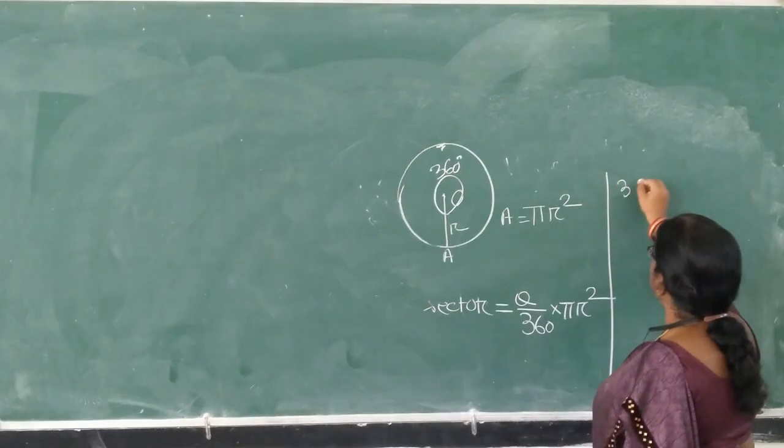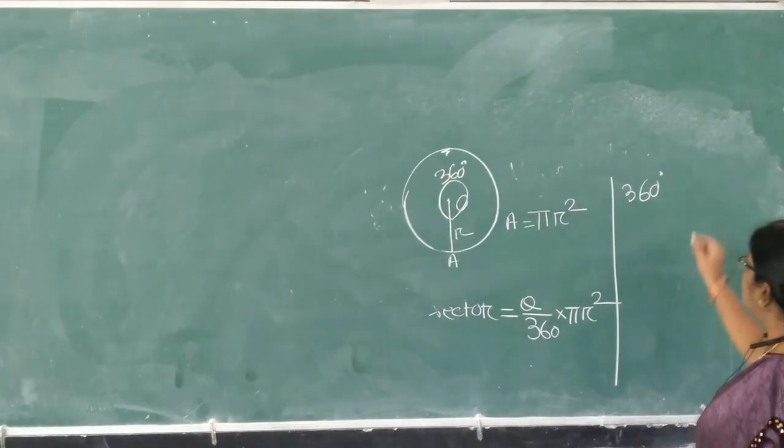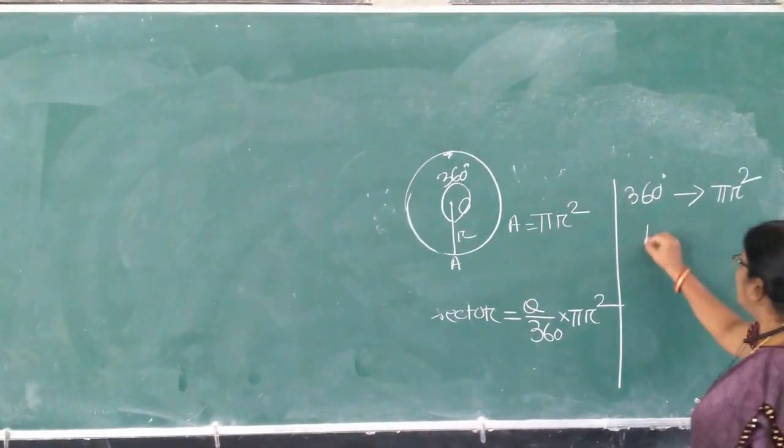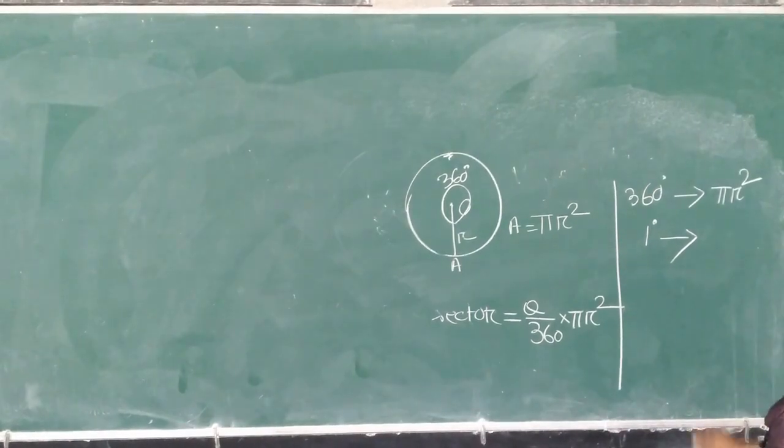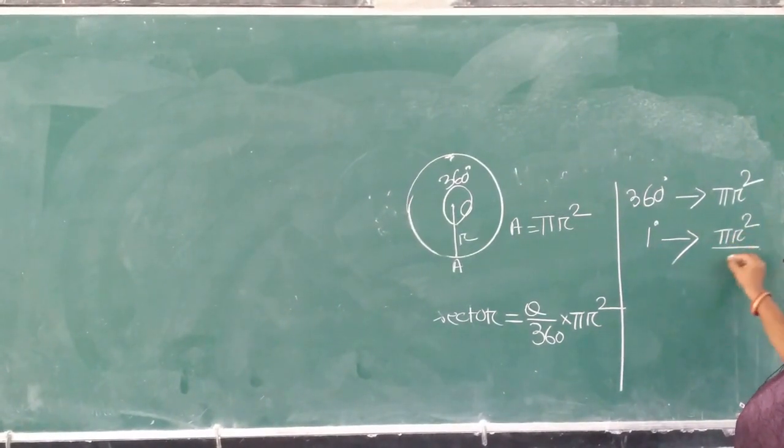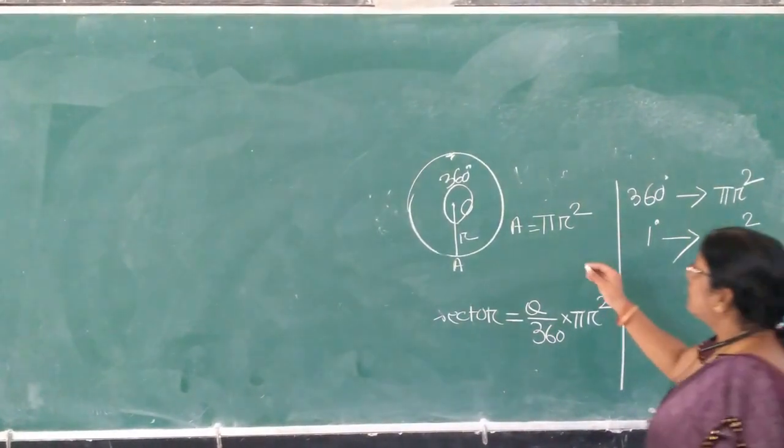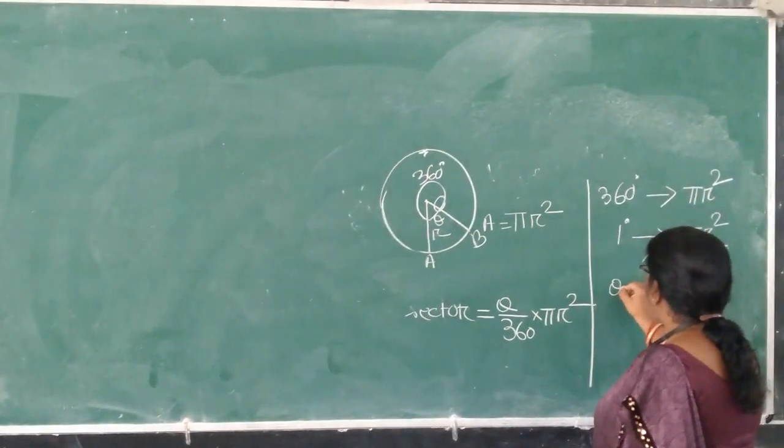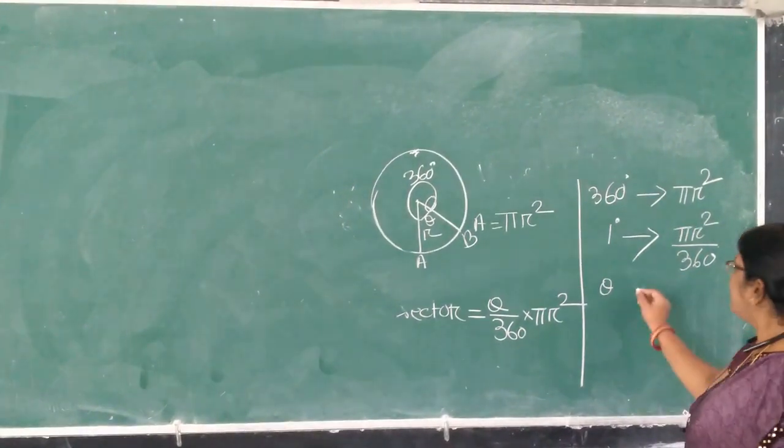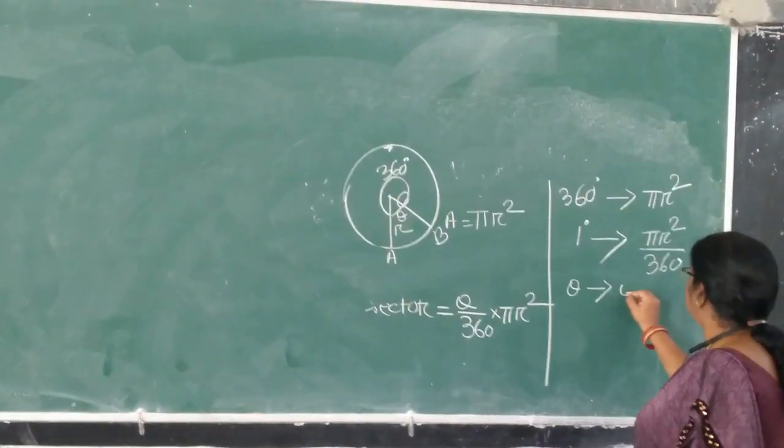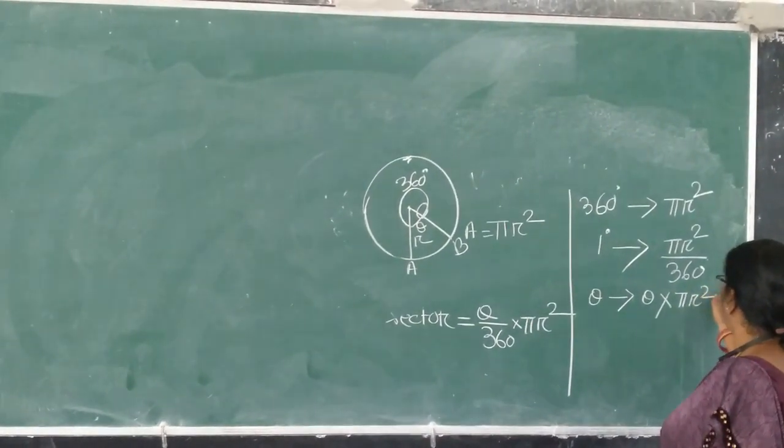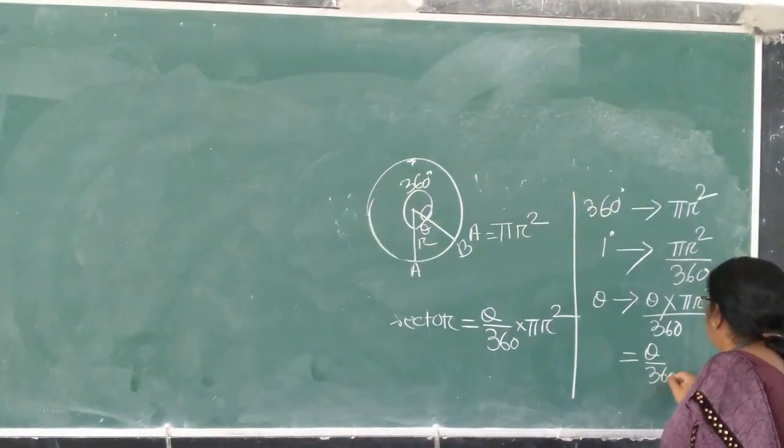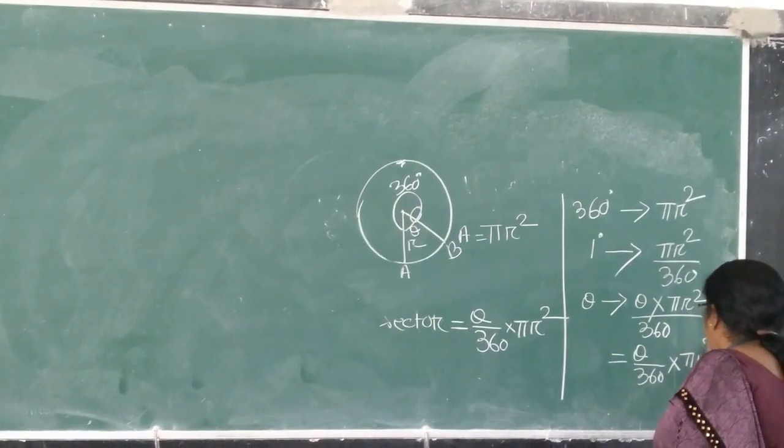At the same time, the radius swept an angle 360 degrees at the center. So, for 360 degrees at the center, it swept the area pi r square. For one degree, it swept the area pi r square by 360. For the angle theta, if the radius swept an angle theta at the center, then it swept the area theta by 360 times pi r square.